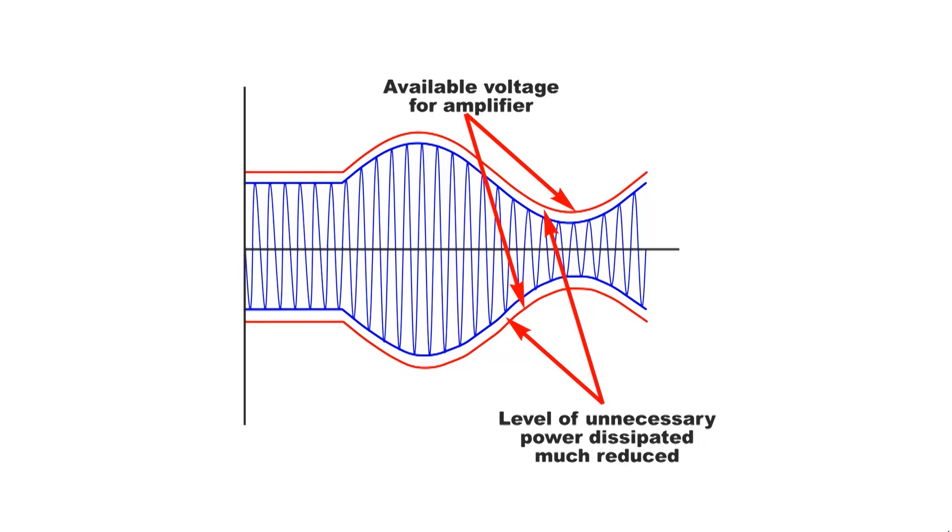In this way, envelope tracking is effectively a power supply technology, one in which the power supply is able to provide exactly what the power amplifier needs rather than what the power supply wants to provide. So how do we achieve this?